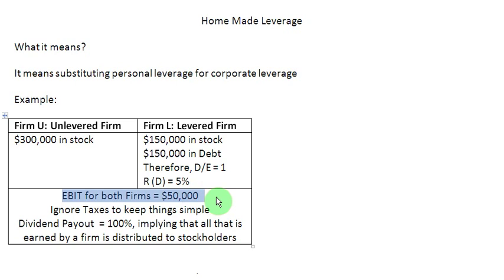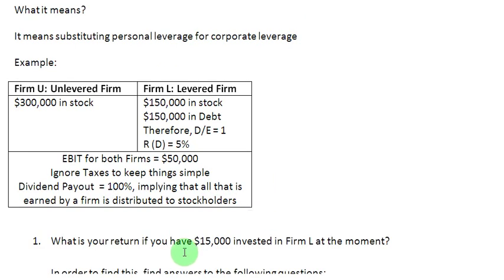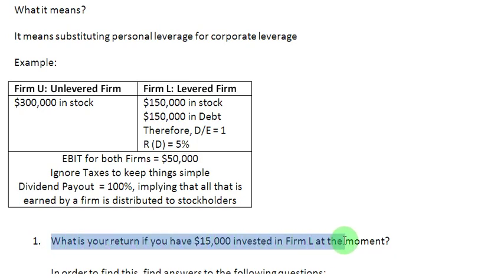For computational ease, we are going to ignore taxes at the moment, and we are also going to assume that the dividend payout ratio of both firms is 100%. Therefore, whatever is earned by these firms is available for distribution to the stockholders. Now, what would be your return if you have $15,000 invested in Firm L?